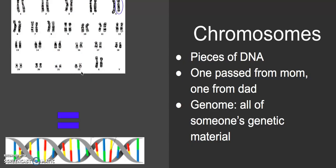Occasionally we'll have events like non-disjunction and end up with a different number of chromosomes than we expect. For instance, Down syndrome is caused by a triplicate of chromosome 21, also known as trisomy 21.